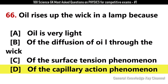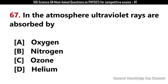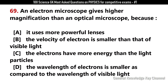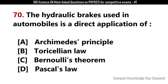In the atmosphere, ultraviolet rays are absorbed by? Answer C: Ozone. Which of the following metals is used for manufacturing heating elements in electric irons? Answer C: Nichrome. An electron microscope has higher magnification than an optical microscope because? Answer D: The wavelength of electrons is smaller compared to the wavelength of visible light. The hydraulic brakes used in automobiles are a direct application of? Answer C: Pascal's law.